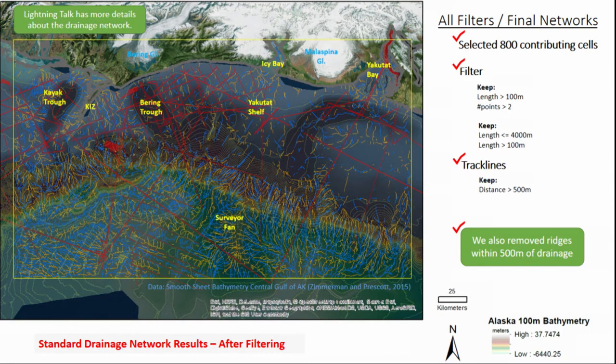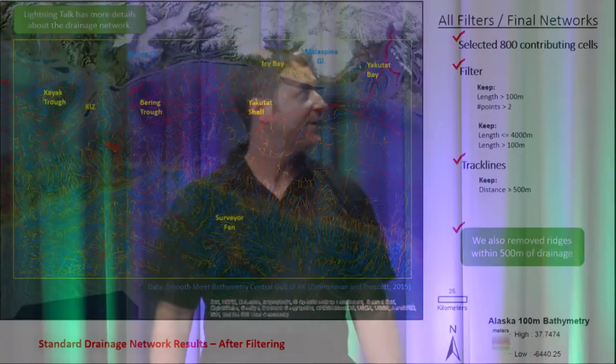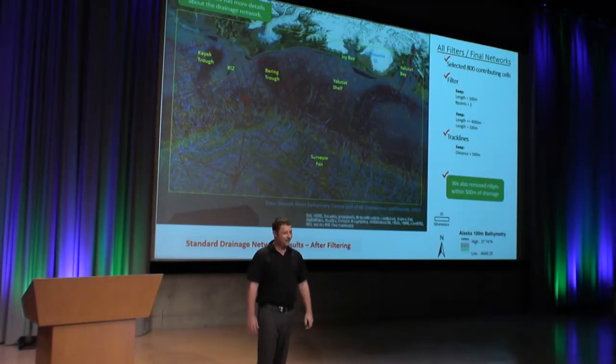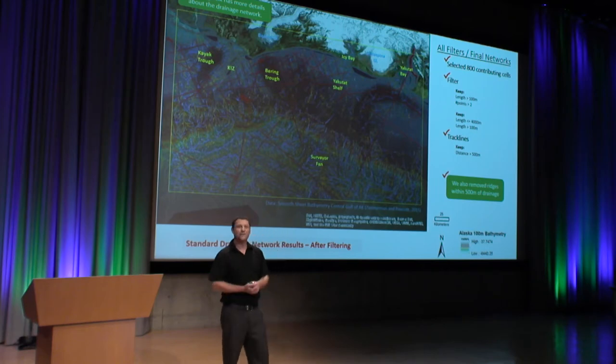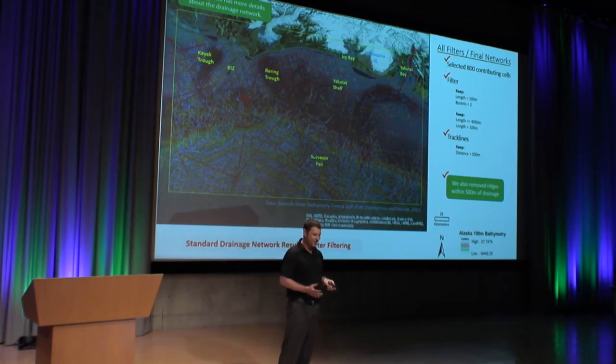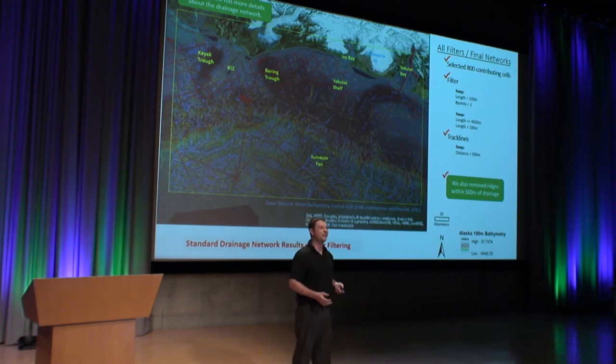I have more details about this in my lightning talk later this afternoon, but this is essentially the final result after applying a series of filters. Links mostly was the best filter. We also wanted to remove the effects of survey tracks, because I noticed that a lot of the edges I was excited about from the fault analysis actually lined up with survey tracks instead and are probably not real data. This is something I'm continuing to work on resolving.